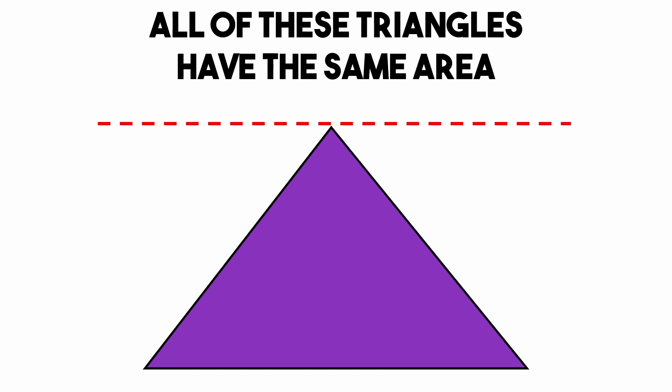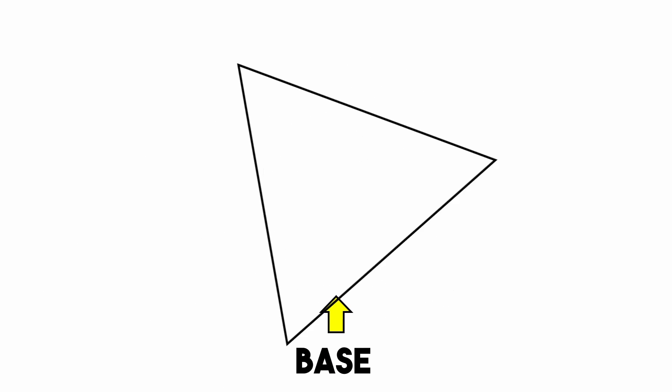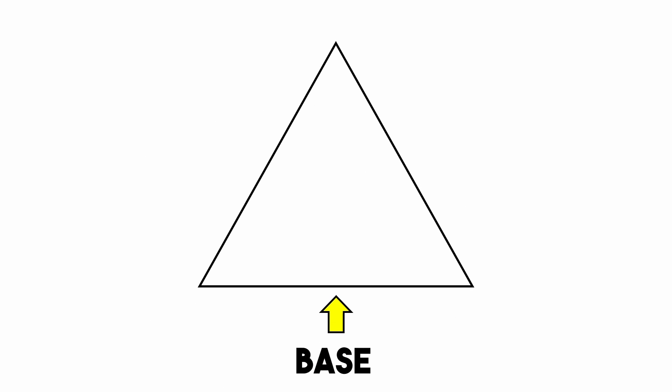If that brief explanation didn't connect, here's a visual. We know that a triangle's area is calculated by using its base and height. The base can be any line of the triangle, so that's pretty easy to picture.